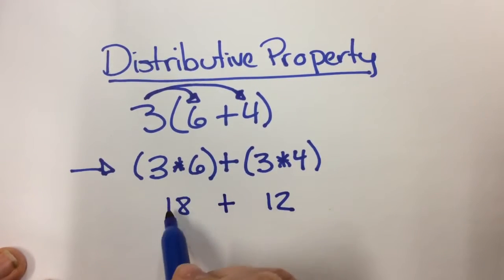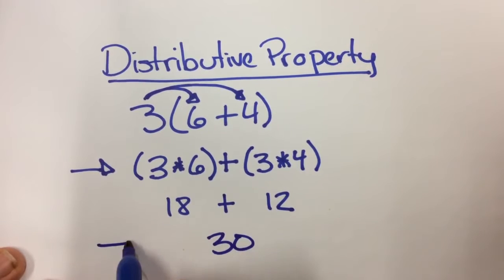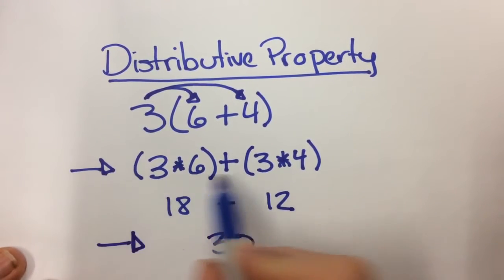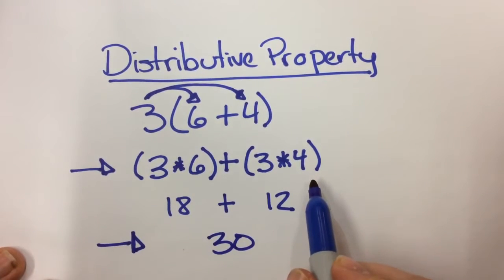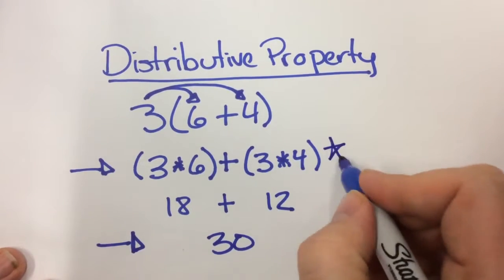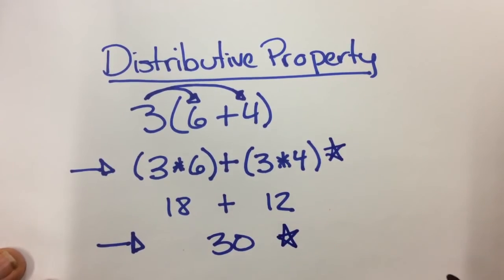Bring down your plus sign. So this 3 times 6 becomes 18. 3 times 4 becomes 12. 18 plus 12 is 30. So this would be the actual answer. But this right here is what I'm looking for when I'm asking you to write the distributive property. You're going to need to do both this and this.